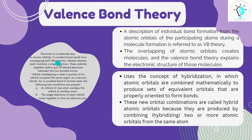We must remember: electrons in a molecule must stay in atomic orbitals. These are the valence bond theory postulates. There are two conditions that must be followed: first, an orbital of one atom overlaps the orbital of another atom, and second, the single electron of each orbital comes together to form an electron pair.